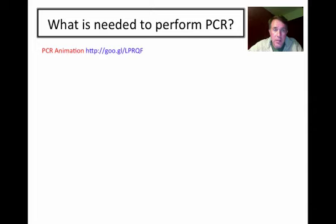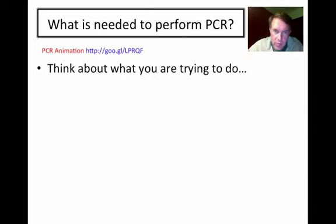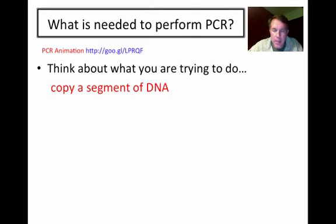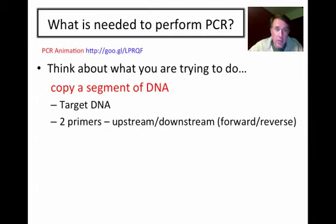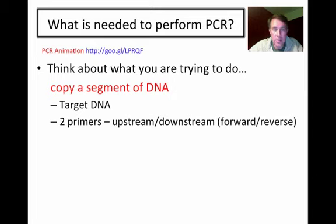Now, if you watched that animation, we have to think about what we're trying to do. Our goal is to copy a segment of DNA, and there are certain things we need to have present. First and most importantly, the target DNA — what is it you're trying to amplify? This could be a disease gene or a stretch of DNA used for some other purpose. You also need two primers, referred to as the upstream and downstream primers or the forward and reverse primers — short stretches of DNA, 15 to 25 base pairs long, long enough to anneal to the DNA target.